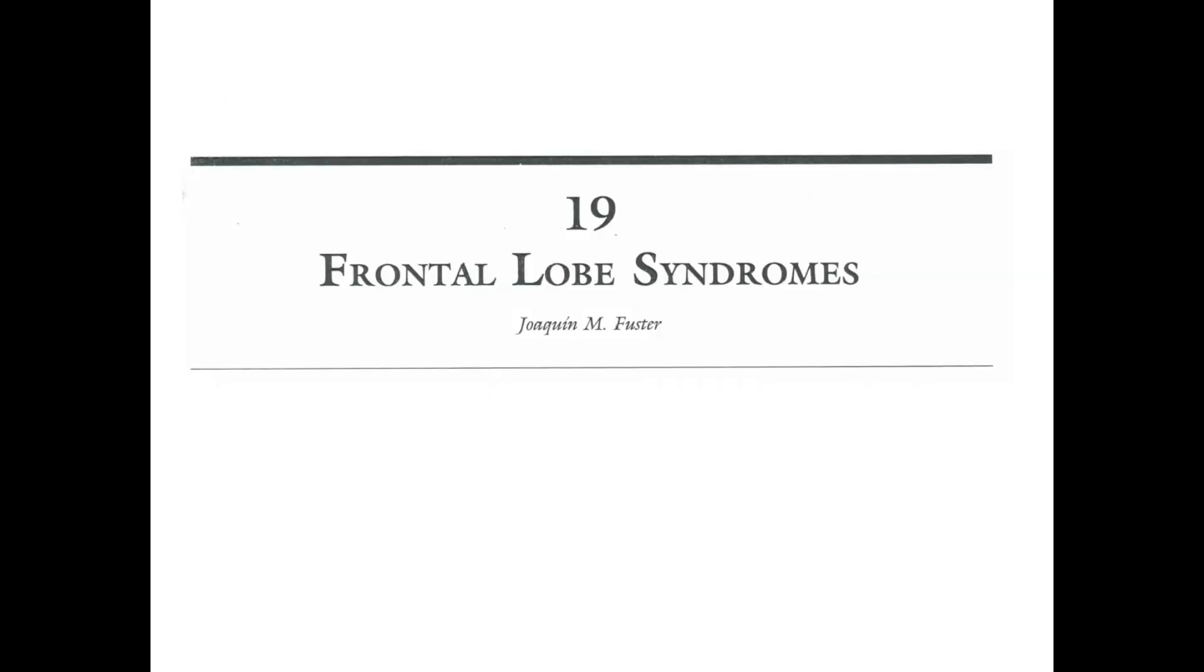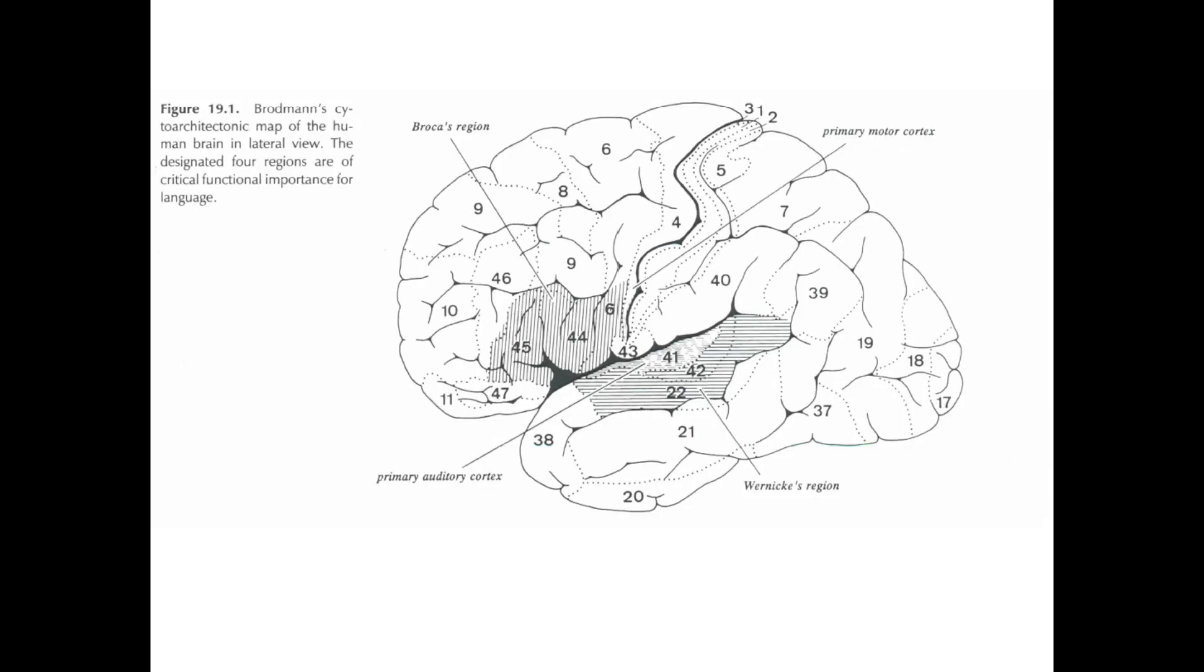Then the second text is the frontal lobe syndrome, it's a very simple one, you have to just read it. The images are very similar to the ones in the previous one, Brodmann's cytoarchitectonic map of the human brain, just showing some areas, in this case the ones related to language.